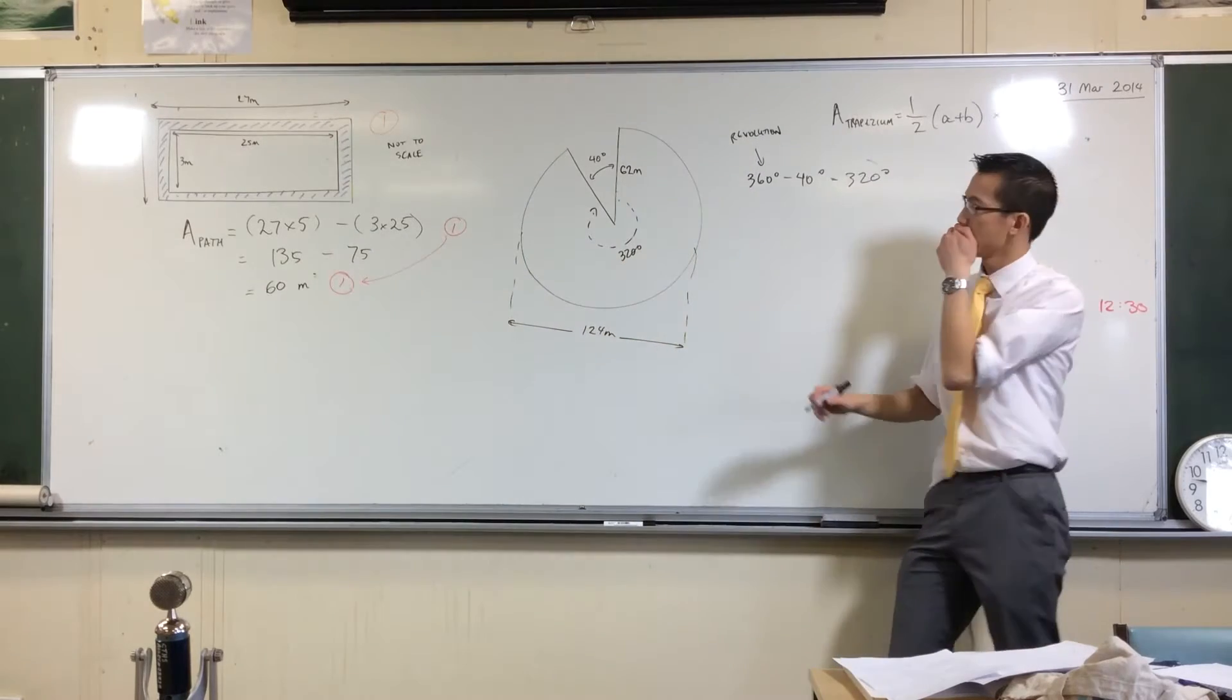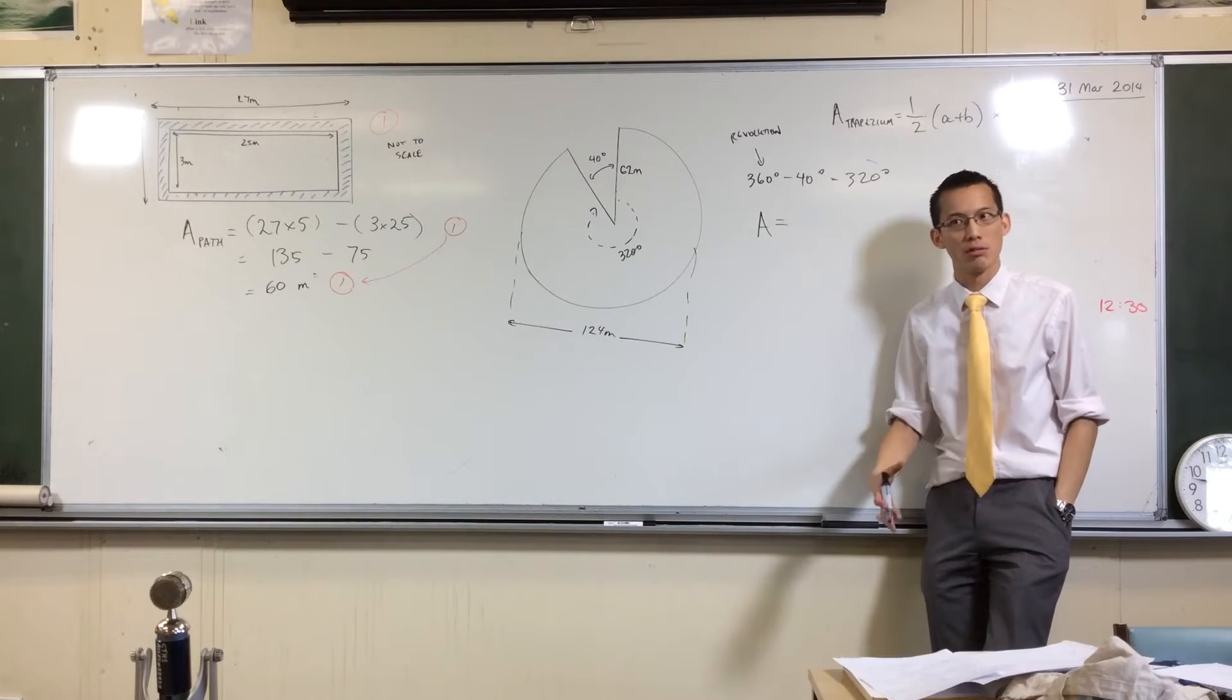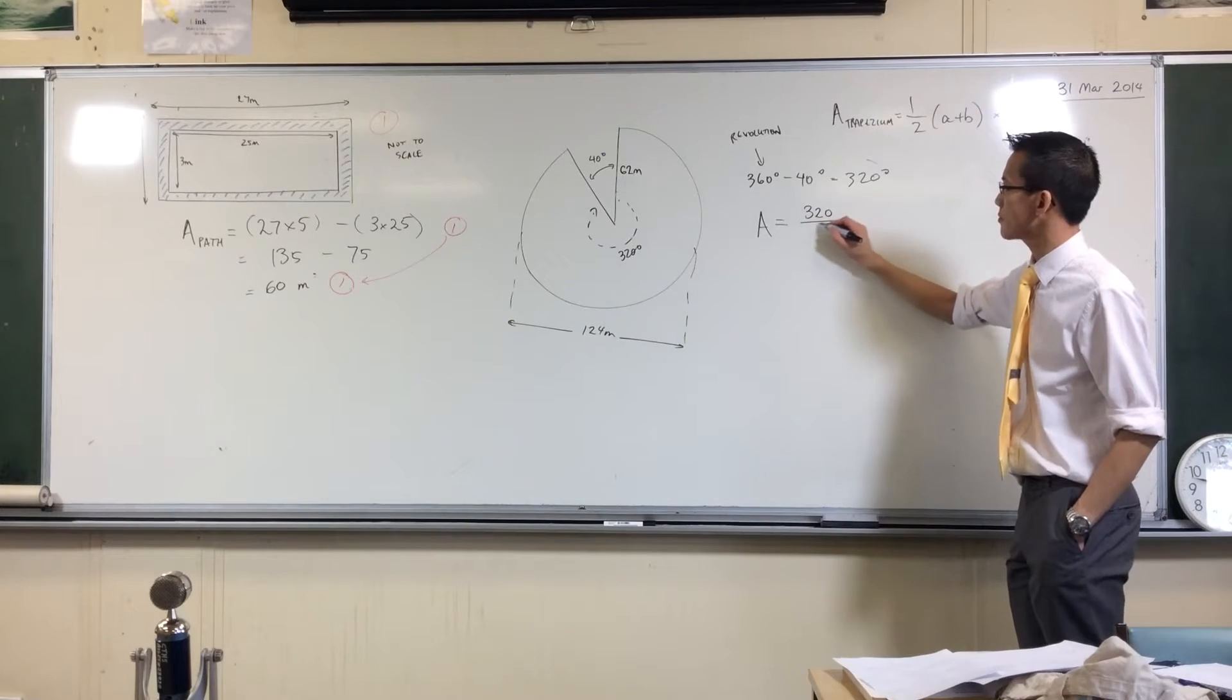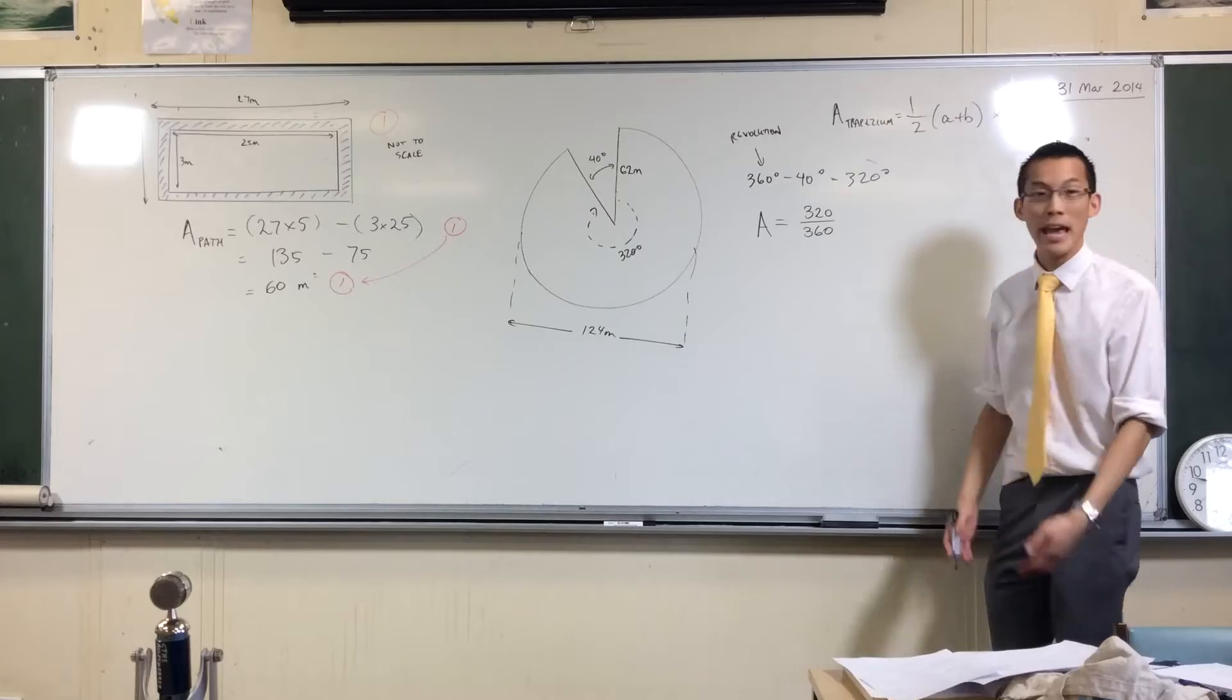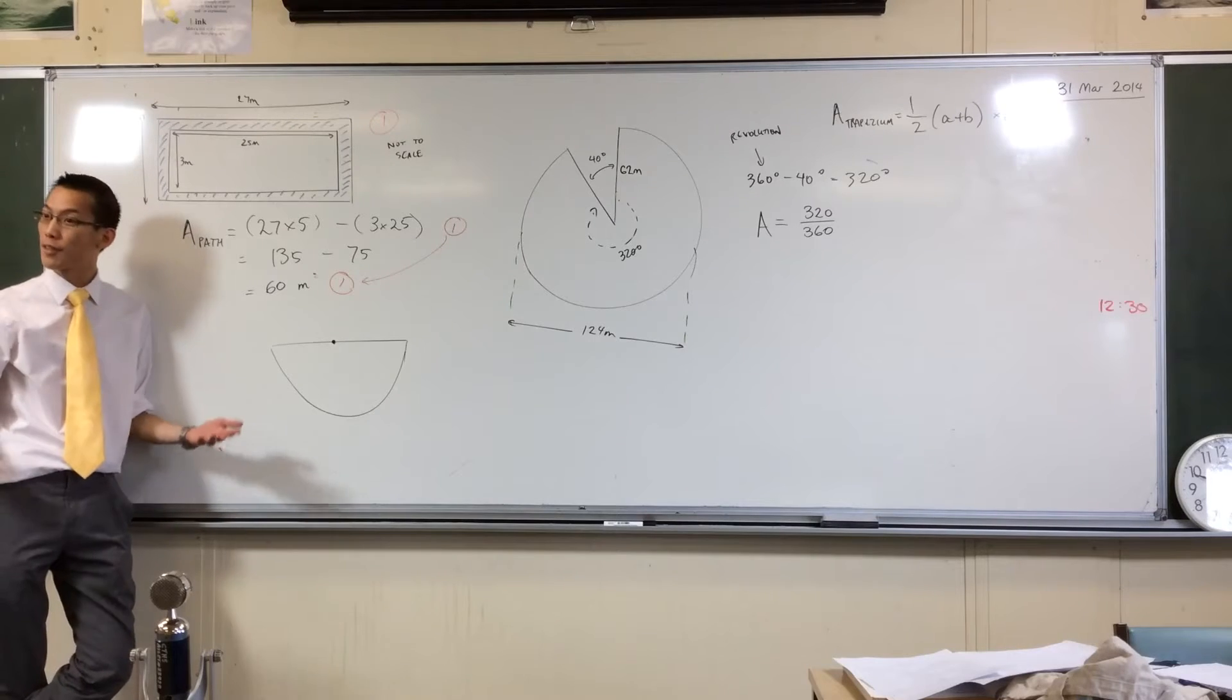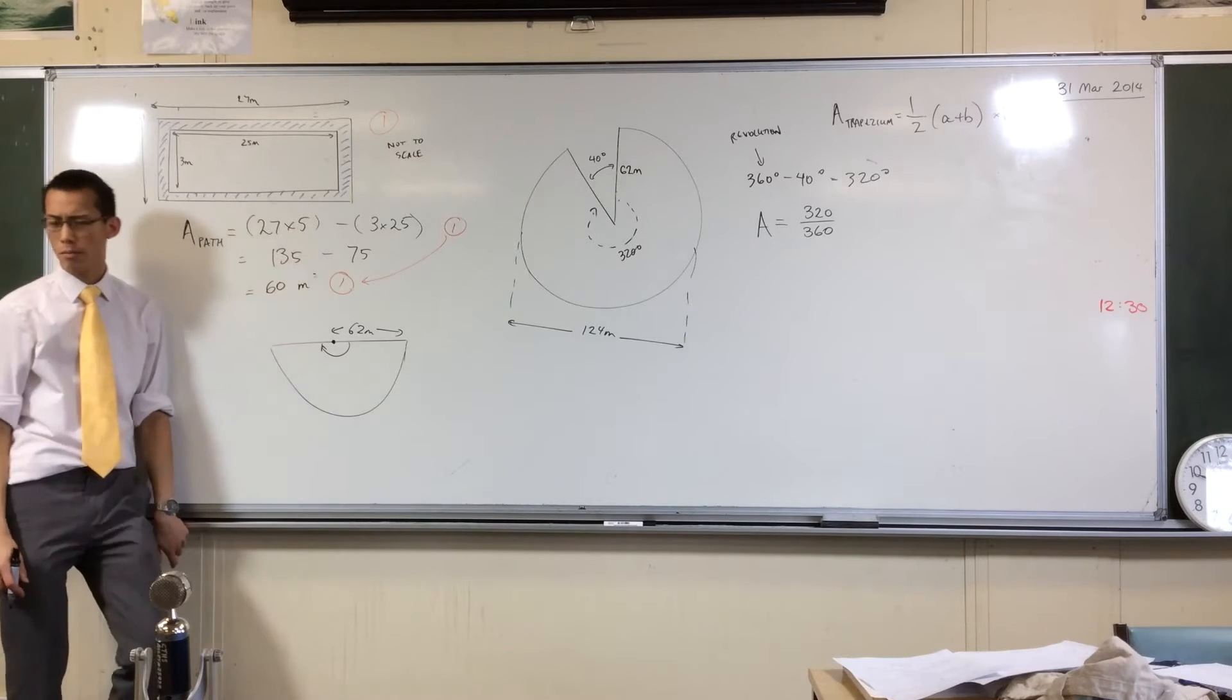So they already helped us work out what the radius is. Now when we want to work out the area, it's not a whole circle. How much of the circle is it? It's most of it, but to be more specific it's this much of the circle. For instance, if we had half the circle, a semicircle, let me just quickly draw one of those. A semicircle is half the circle, right? So let's just take the same dimensions here, let's say the radius was 62. Now if this is half a circle what's the angle? It's 180 degrees.